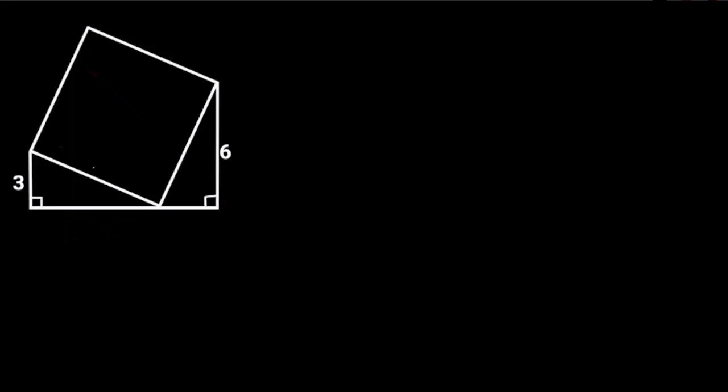In this figure, a square is inscribed in an irregular pentagon. If the two opposite sides of the pentagon are 3 and 6 units respectively, find the area of the square.